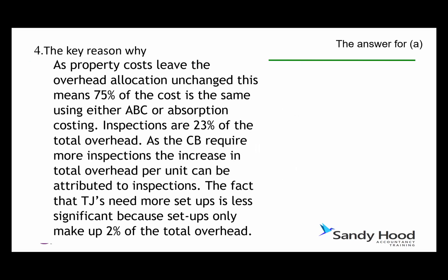In the final paragraph: as property costs leave the overhead allocation unchanged, 75% of the cost stays exactly as it was. Inspections represent 23% of the overhead, and since CB requires more inspections, the increase in overhead per unit can be attributed to inspections. The fact that TJ needs more setups is less significant because setups also make up only 2% of the total overhead.